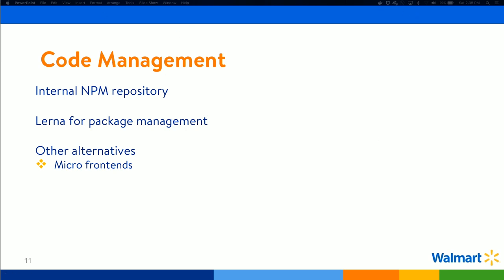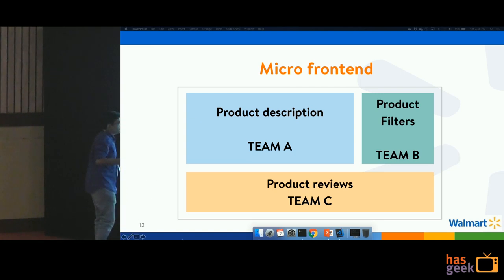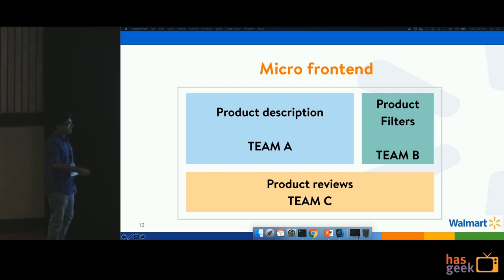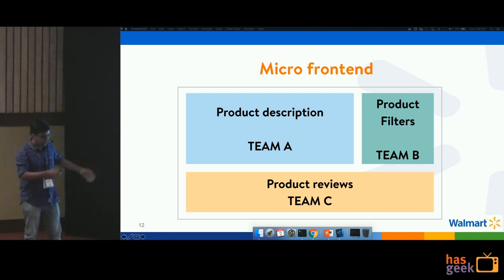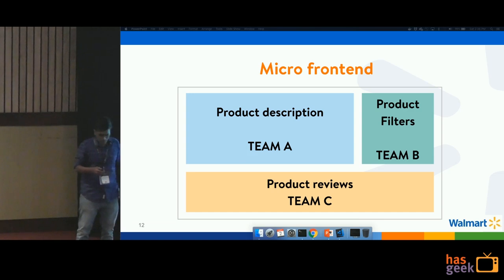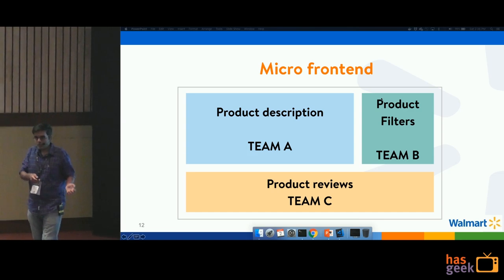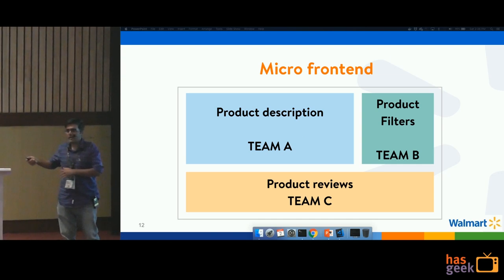Another approach that comes to mind when talking about npm and dividing applications into multiple packages is the micro frontend. Think of a product application where you have a product description, some filters, and some reviews. This application is being built by multiple scrum teams — team A on the description, team B on the filters, team C on the reviews. Each team would create a custom element for their package in an independent codebase, developed using Angular, React, or whatever framework they choose.